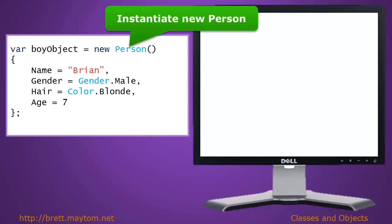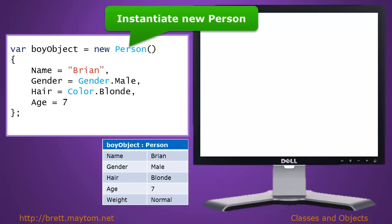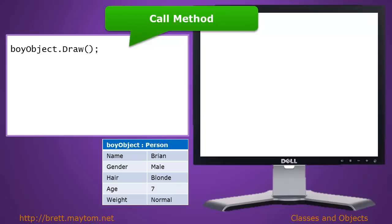I'm now going to demonstrate objects in a screencast. First, we instantiate a new person by creating a variable called boy object and setting it to a new person. We set the name to Brian, gender to male, blonde hair, age 7. When that code executes, an object is created in memory with those properties set. Next, we call a method — on the boy object, we call the draw method, and when executed, the data is used and the object is drawn on screen.